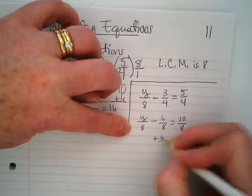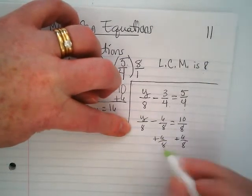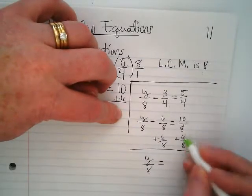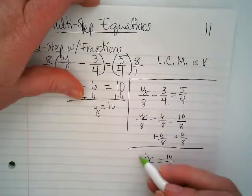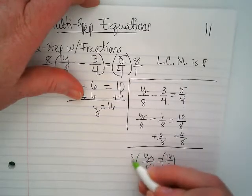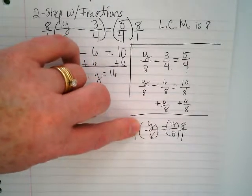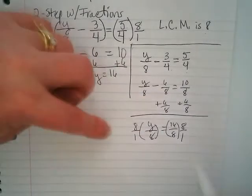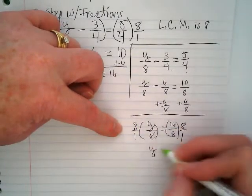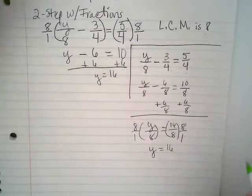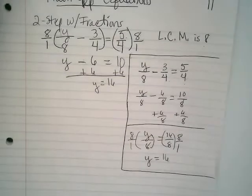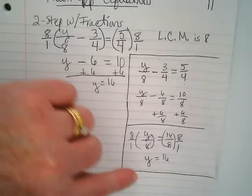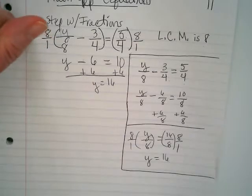And then I'm going to add 6 over 8 to both sides. And I get Y over 8 is equal to 16 over 8. And now I need to multiply both sides by 8 over 1. Because I need, this is, the 8 is still a denominator with the Y and we want the Y to be by itself. This cancels and gives us Y equals 16. Both work.